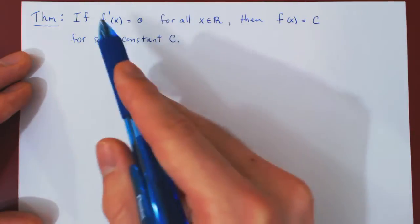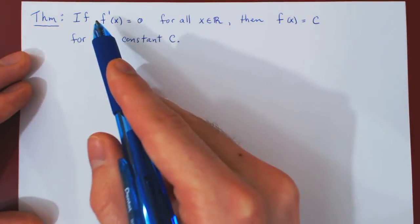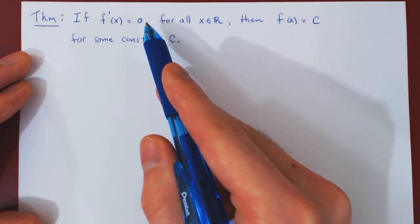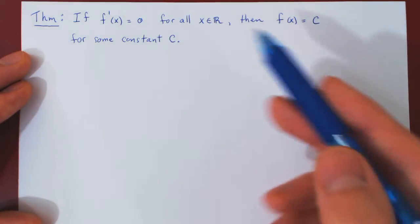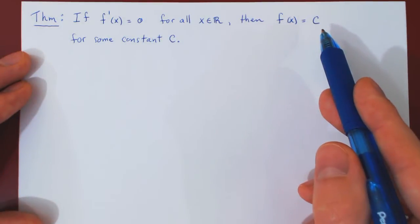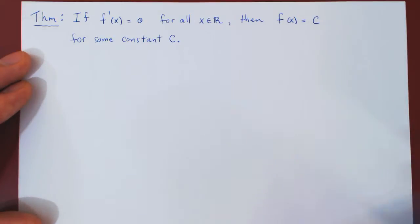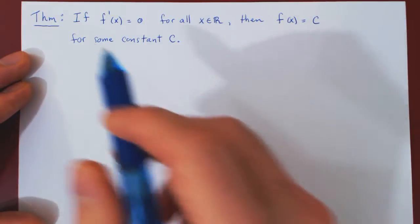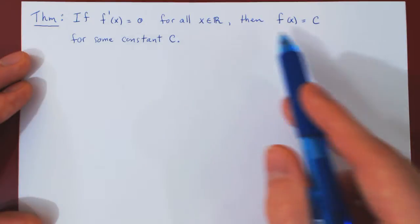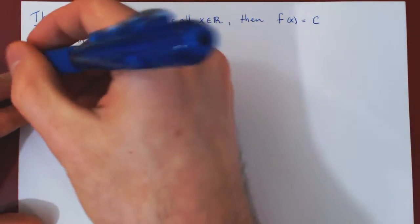So if the derivative of the function is 0 everywhere, the curve is flat everywhere, it is never changing, therefore it must be a constant function. So the graph of f of x is a horizontal line. So we now will prove this very intuitive result with the mean value theorem.